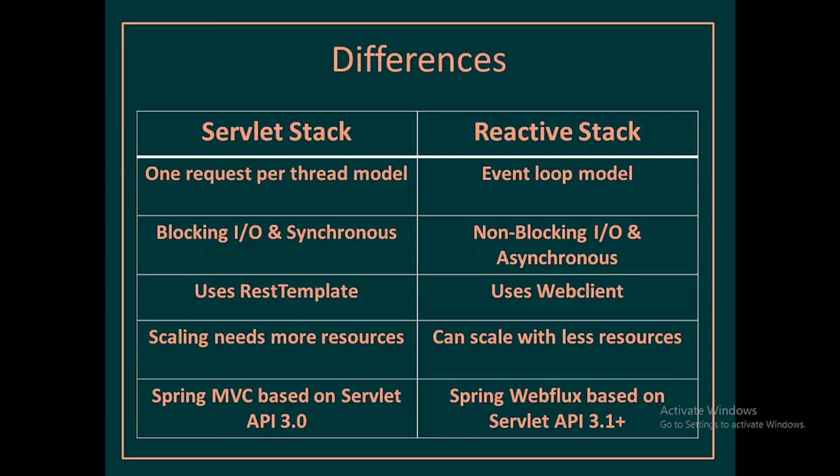Whenever the response is available, we get a Flux or a Mono reactive type. This is similar to Java 8's CompletableFuture, where we get a Future object. In the same way, WebClient returns a Flux or Mono — whenever the response is available, we process it and send it back to the client.